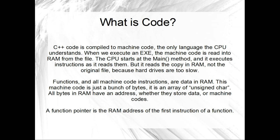It branches and does if-statements and that sort of thing, but it pretty much just reads the instructions as it goes. The thing is that it reads the copy in RAM - it doesn't read the original file on the hard drive, because hard drives are too slow. So what we end up with is functions stored in RAM as machine code instructions. Which means that functions are just data in RAM, exactly the same as variables. The code that the CPU is running is just a big array of unsigned char. All bytes in RAM have an address, whether they store data or machine code. So a function pointer is really just the address of the first instruction of a function. The more you look into the way a modern computer works, the more you start to realise that there's actually no difference between instructions and data.